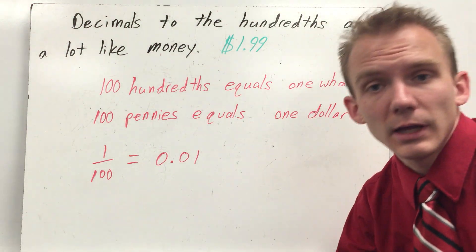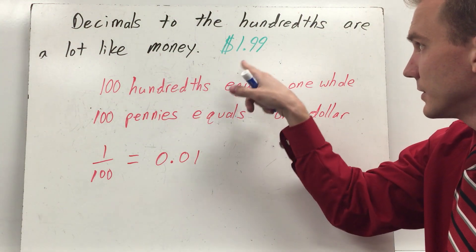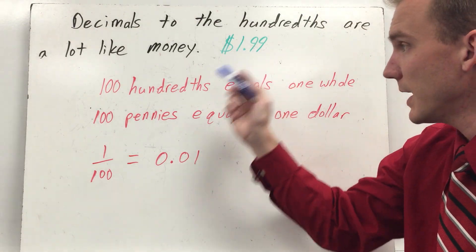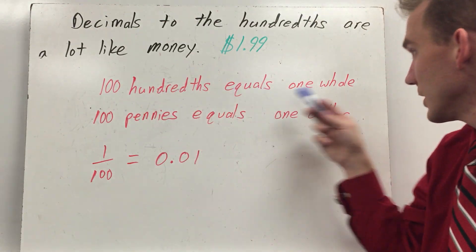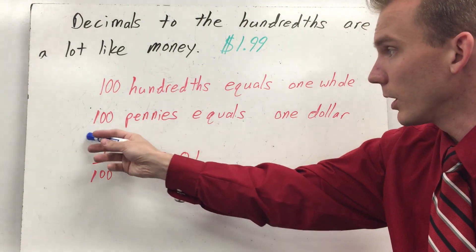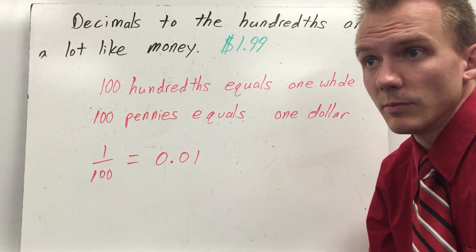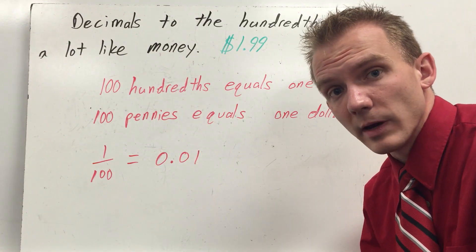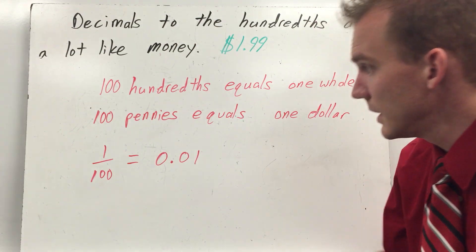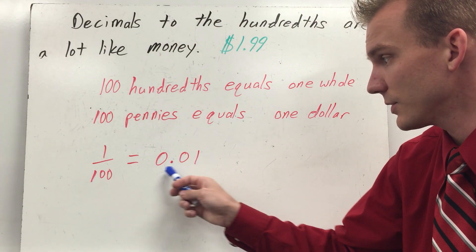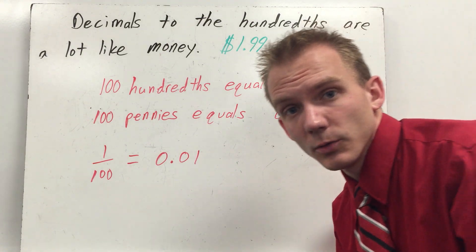Decimals to the hundredths are a lot like money. You have a dollar ninety-nine or one and ninety-nine hundredths. If you had another penny, you'd have a hundred hundredths which equals one whole, because then you have another whole dollar. A hundred pennies equals one dollar. That's why money is written in decimal format, because the pennies are like hundredths. One hundredth in fraction format would equal 0.01.